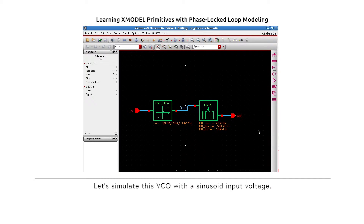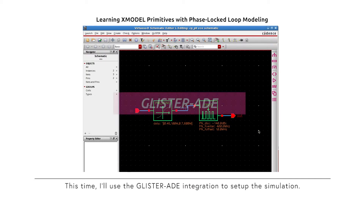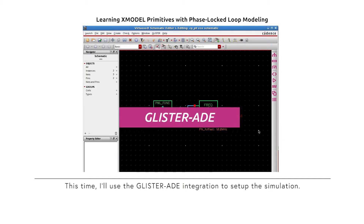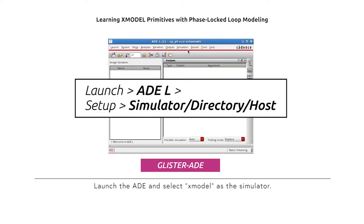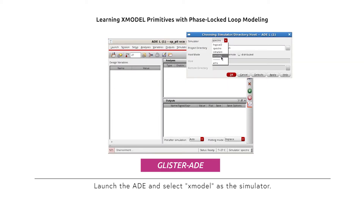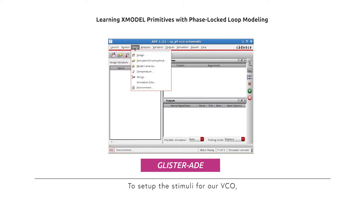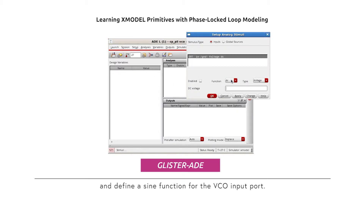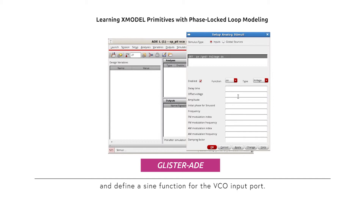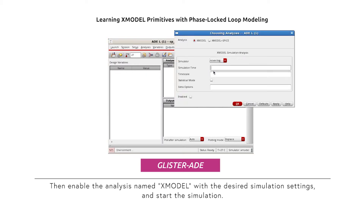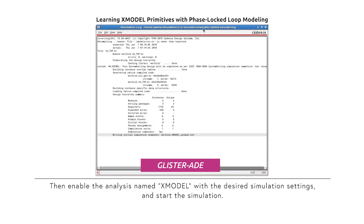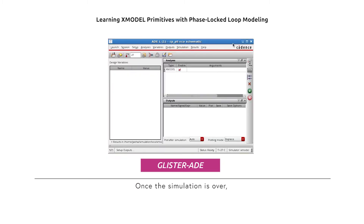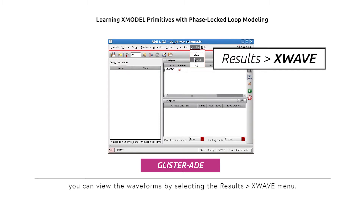Let's simulate this VCO with a sinusoid input voltage. This time, I'd like to use the Glister ADE integration to set up the simulation. Launch the ADE and select X-Model as the simulator. To set up the stimuli for our VCO, select the Setup Stimuli pulldown menu and define a sine function for the VCO input port. Then enable the analysis named X-Model with the desired simulation settings and start the simulation. Once the simulation is over, you can view the waveforms by selecting the Results X-Wave menu.